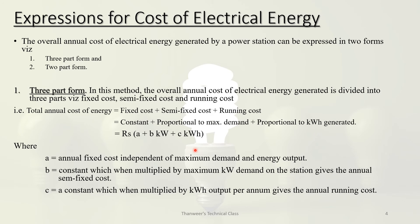kW is active power — the maximum active power output is measured in kW, and energy in kWh. In the formula, 'A' is the annual fixed cost independent of maximum demand and energy output. 'B' is a constant which when multiplied by maximum kW demand gives the annual semi-fixed cost. 'C' is a constant which when multiplied by kWh output gives the annual running cost.